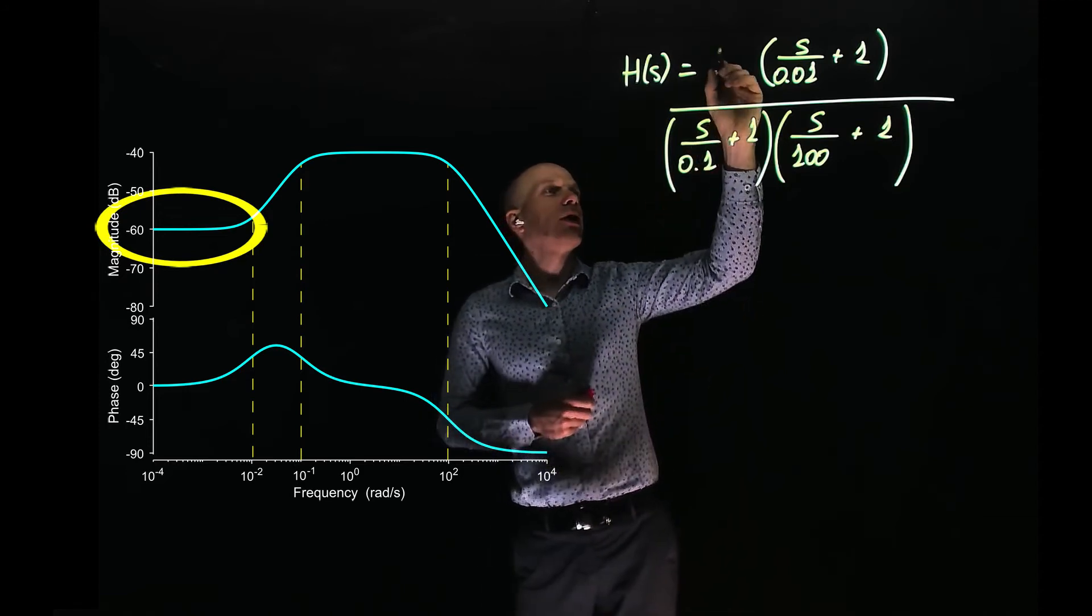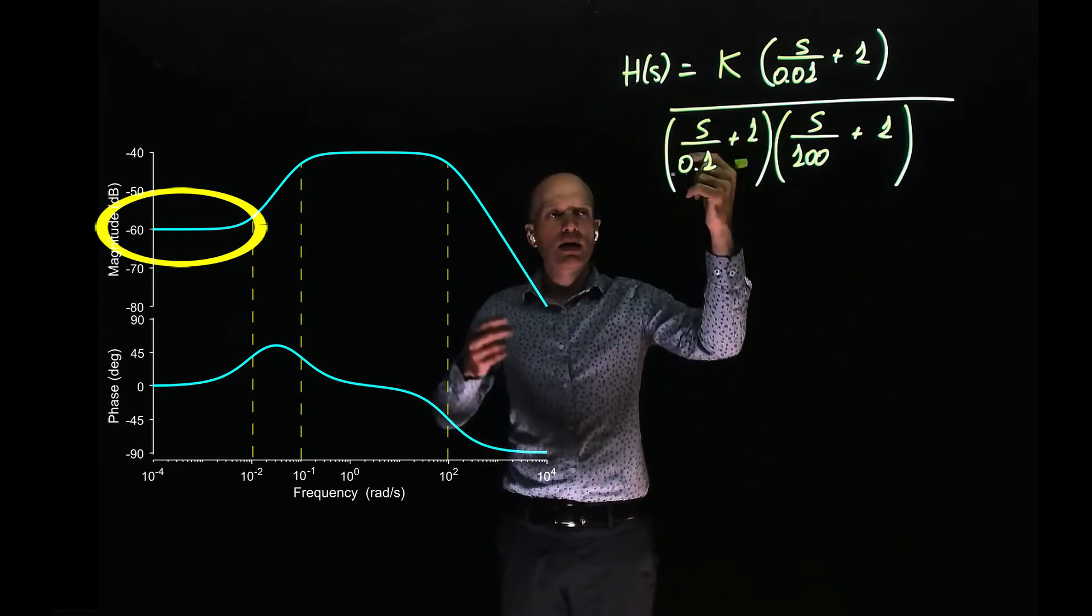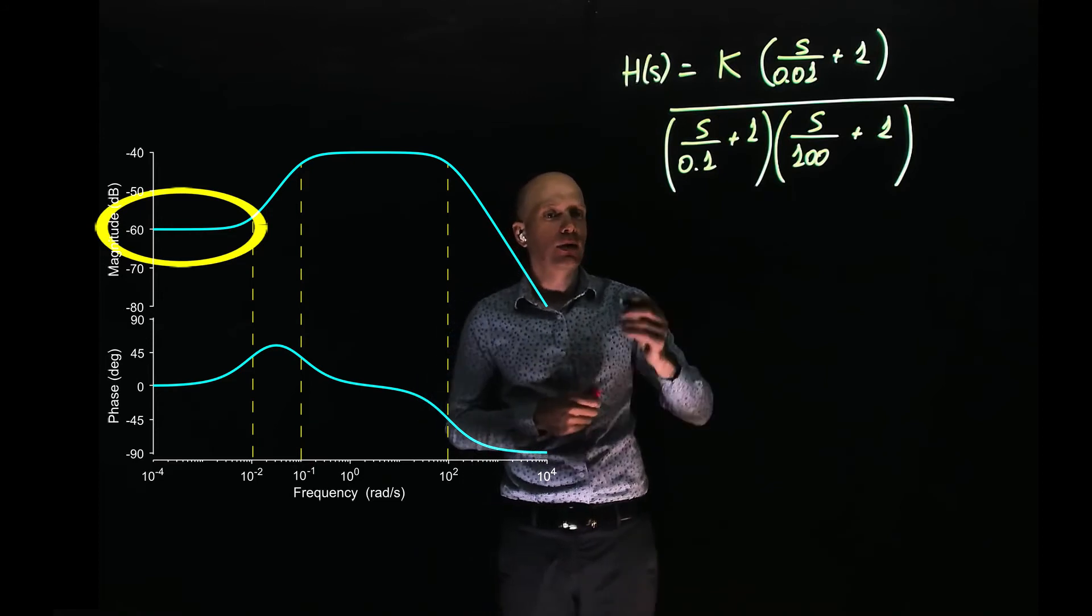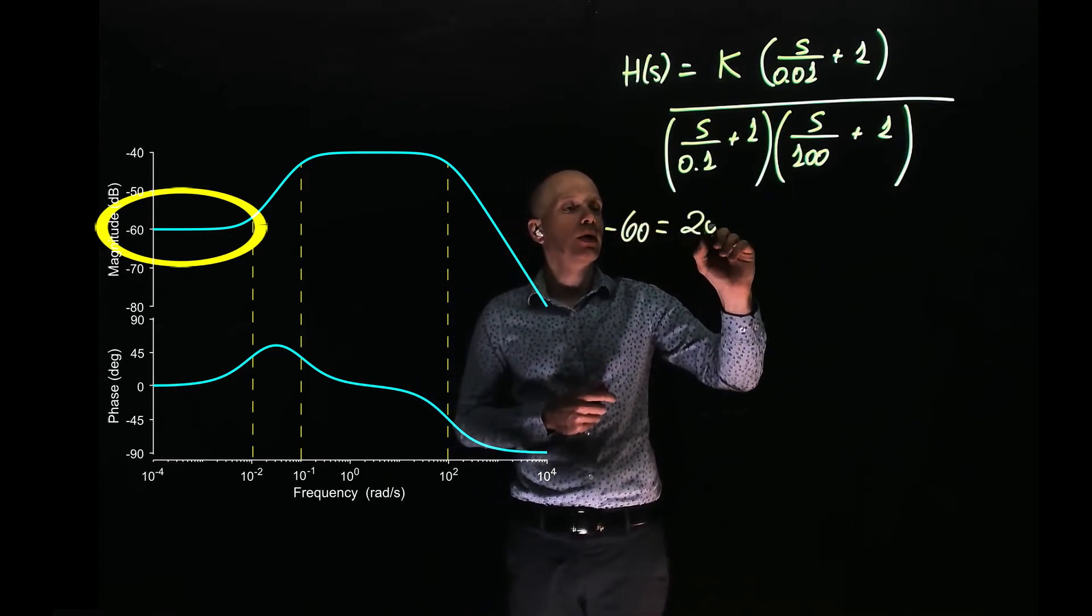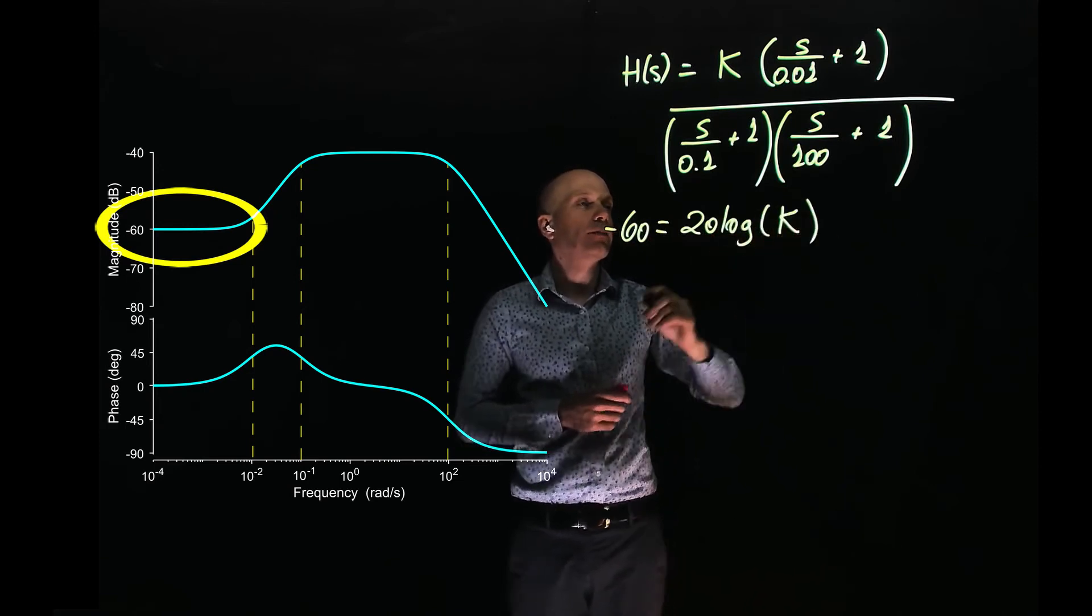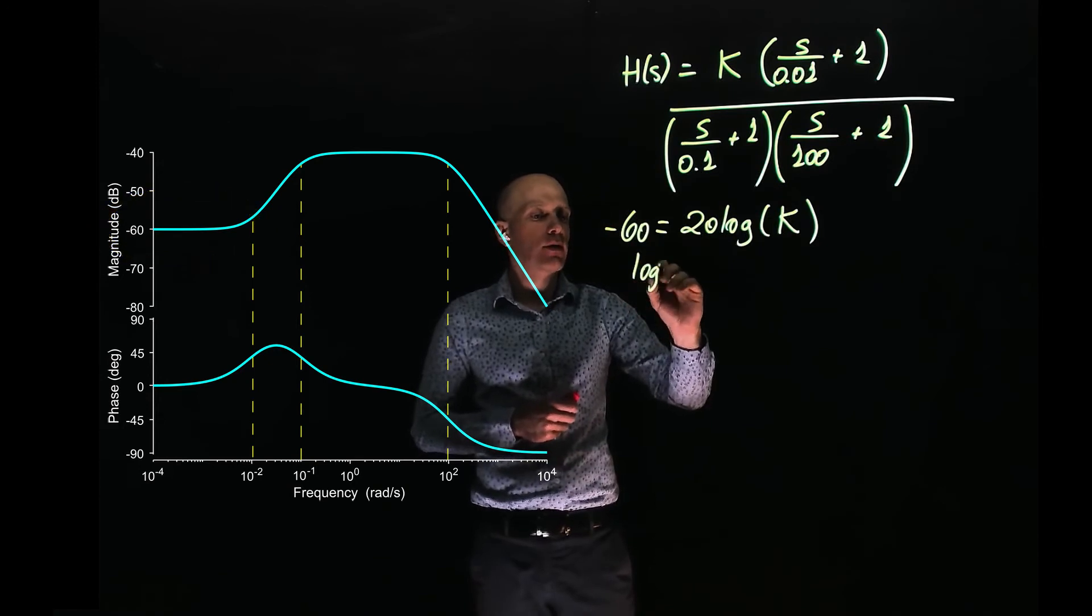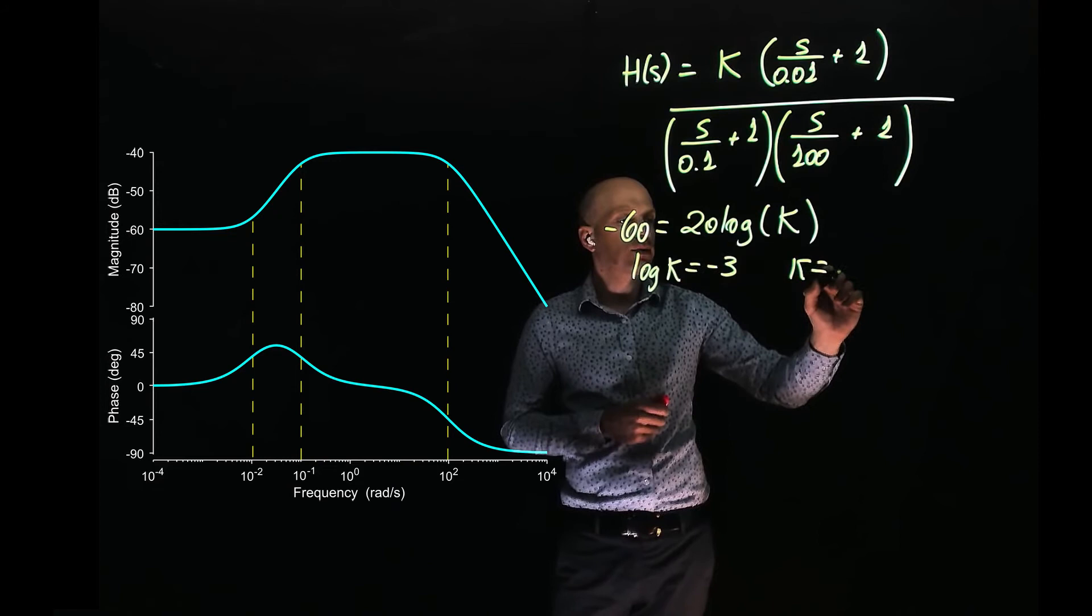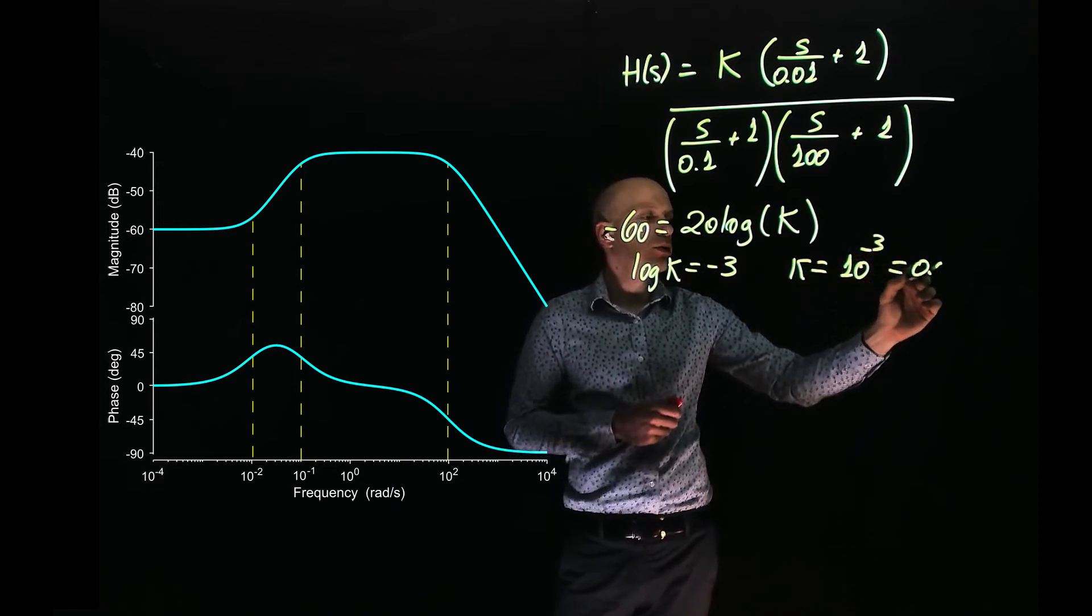Well, we know if you add a value of k here, a constant gain, we know that this k is making everything shift down by negative 60 decibels. We have negative 60 equals to 20 log of k. We solve this. We have log of k equals to negative 3, k equals to 10 to the power of negative 3 equals to 0.001.